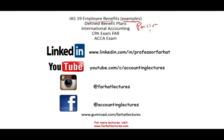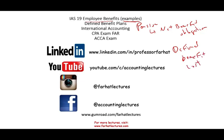We're going to be looking at the two components of pension, and hopefully you remember them from the prior session. The net benefit obligation — this is the balance sheet account — and the defined benefit cost, which is the income statement account. Those are the two components.